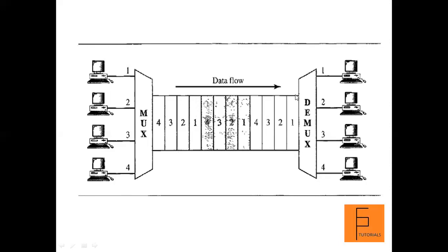This happens in a round-robin fashion: first station 1 transmits, then station 2, then station 3, then station 4, then back to station 1, station 2, station 3, station 4, and so on. In this way, time slots are divided and one slot is allotted for each device.